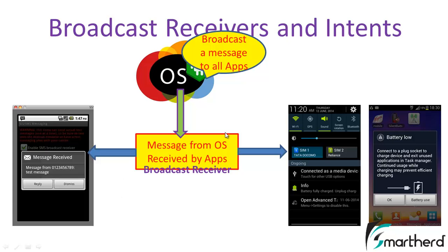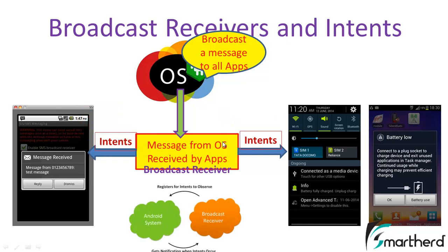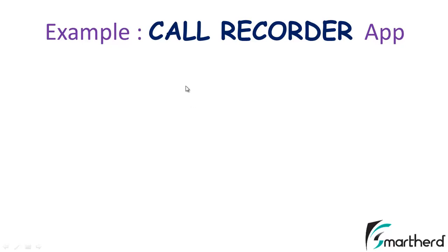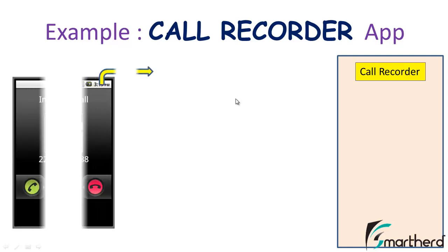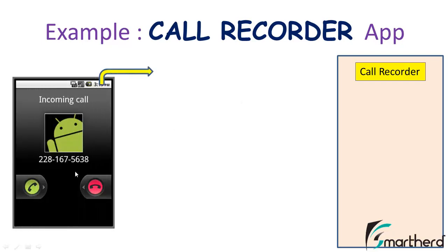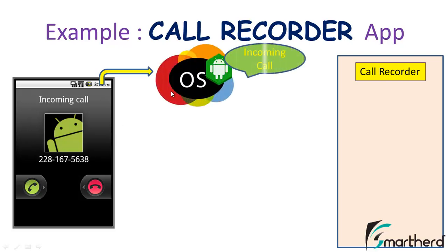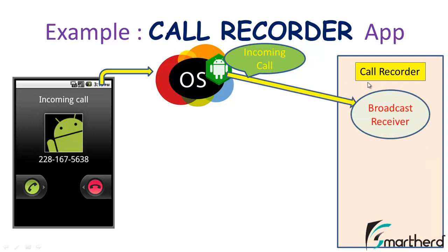The broadcast receiver is able to perform such functions with the help of intents in Android. For example, suppose in our smartphone we have a call recorder application. When there is an incoming call, the Android operating system broadcasts a message to all applications: 'Hey, there is an incoming call.' The call recorder application responds by saying it is here to receive this message, and that it has a broadcast receiver ready to catch the incoming call message.